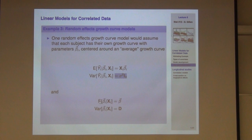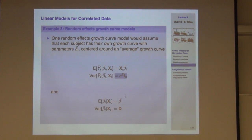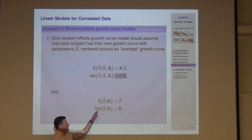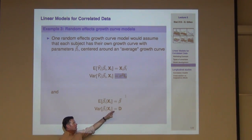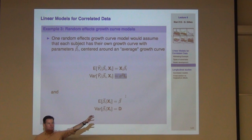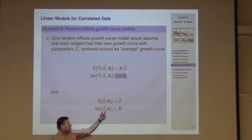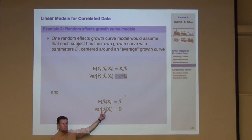The model assumes that each subject's trajectory is centered around a population trajectory: E[beta_i | X_i] = beta (the population beta), but with variation — Var(beta_i) = D, a p by p covariance matrix. In the quadratic example, beta had dimension three (beta_0, beta_1, beta_2), so D is 3 by 3. The random intercept model is a special case of this, where only beta_0 is subject-specific and everything else is held constant — capturing that people just start at different levels.